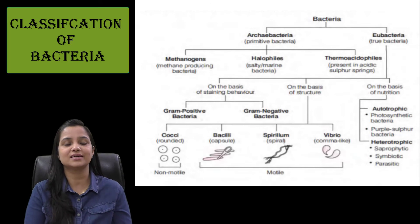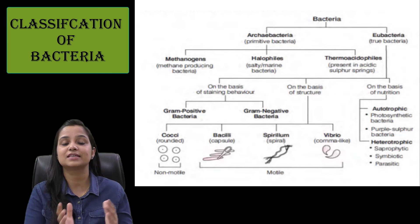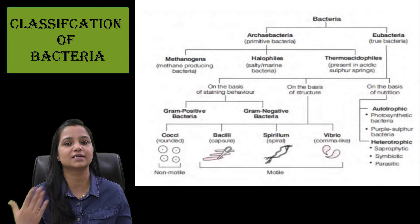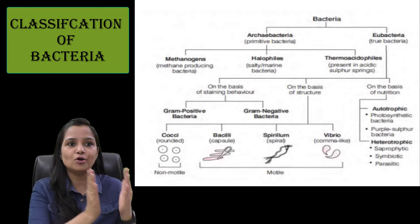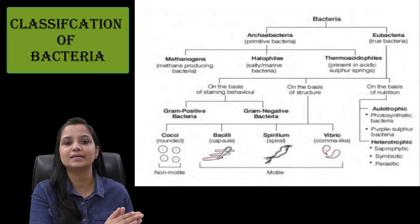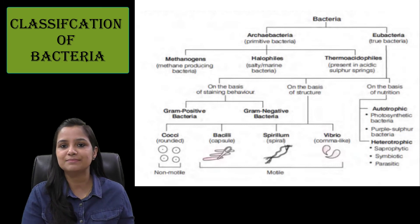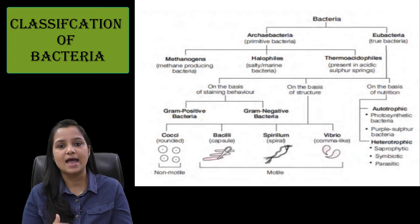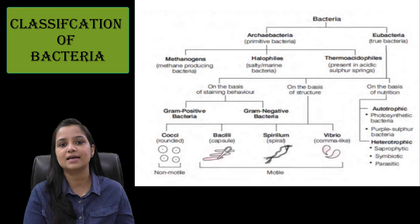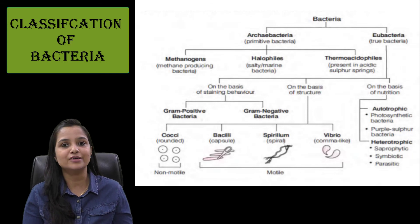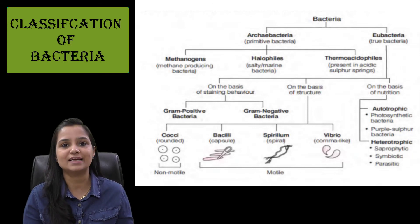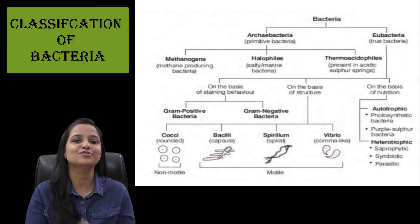On the basis of nutrition, it is further divided into two main types: the first one is autotrophic and the next one is heterotrophic. Autotrophic is again divided into two types: photosynthetic bacteria and purple sulfur bacteria. Heterotrophic bacteria is divided into three types: saprophytic, symbiotic, and parasitic. So that's all about the bacterial classification. Thank you so much.